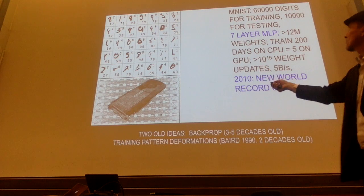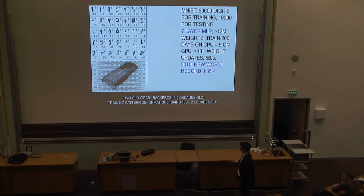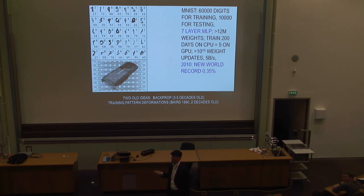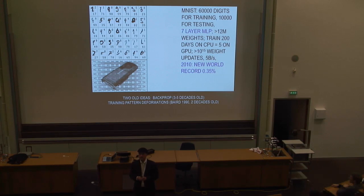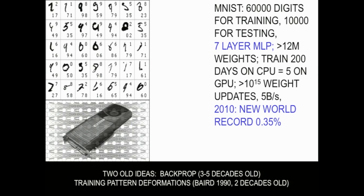MNIST is one of those benchmarks that used to be challenging. Over the years, many different machine learning methods were applied to it, and benchmark records were broken again and again. What we did was take a deep multi-layer perceptron with many layers and train it by backprop, getting the best result in the history of MNIST. The only additional idea was — besides backprop, which was three to five decades old by then — that was in 2010.